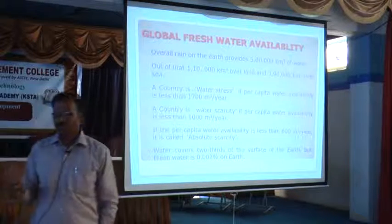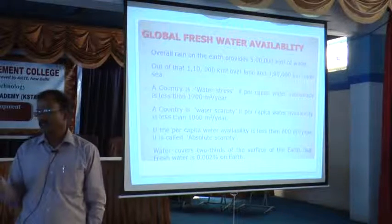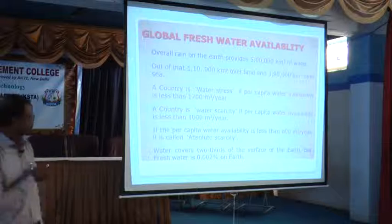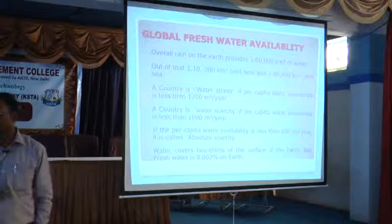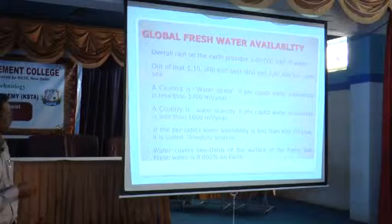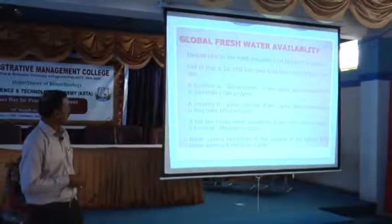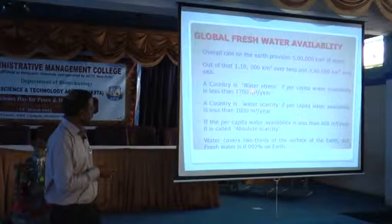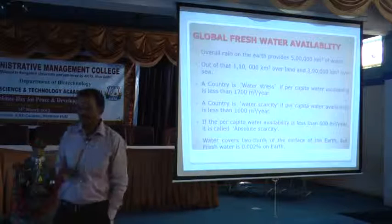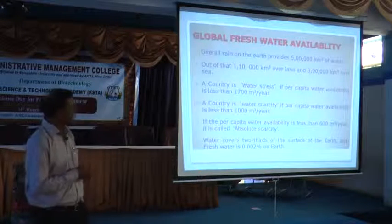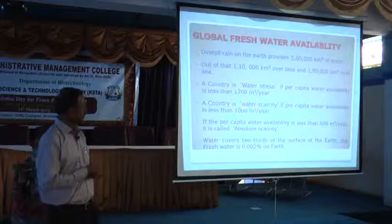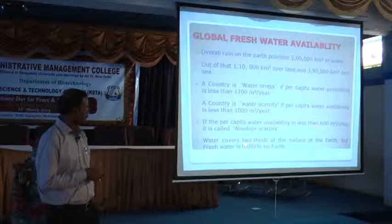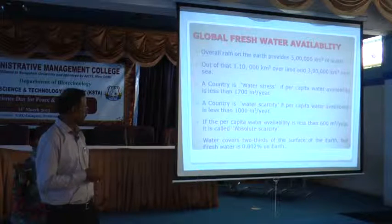Fresh water we are getting only through precipitation. Out of that, the world is getting around 5 lakh cubic meters of fresh water. Out of that, 1.1 lakh is on the land and the rest is on the sea. So, if any country has water availability of 1700 cubic meters per year per capita, that country is called a water-stressed country. If it is around 1000, that is a water scarcity country. And if any country has per capita water availability of around 600, that is called absolute scarcity.